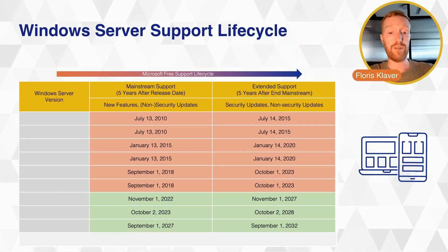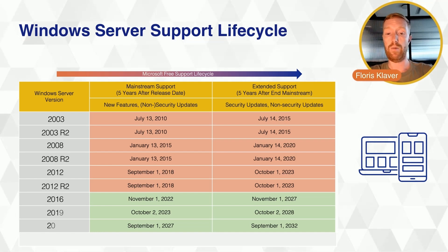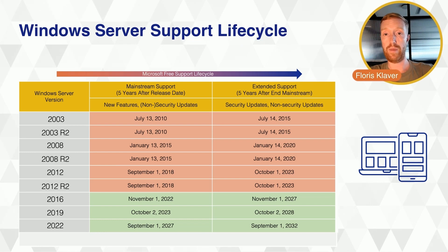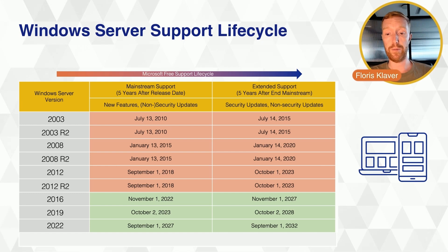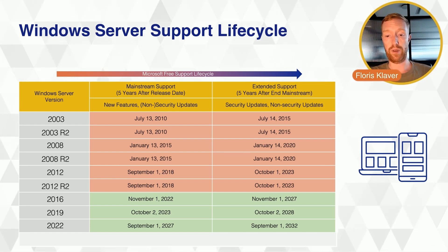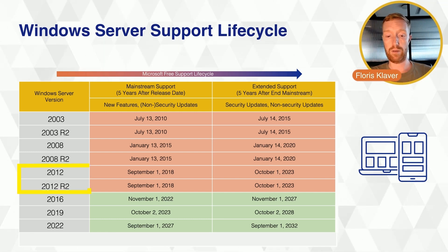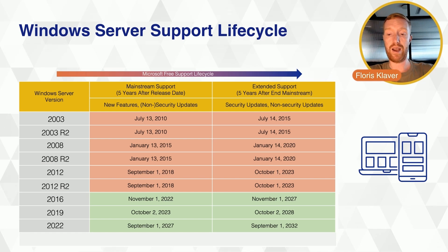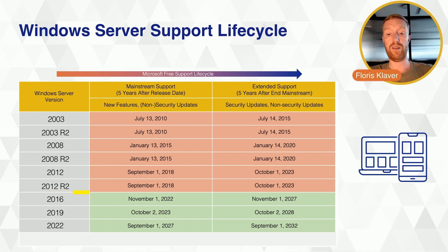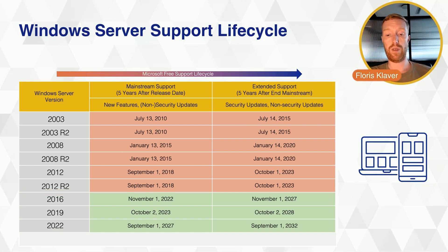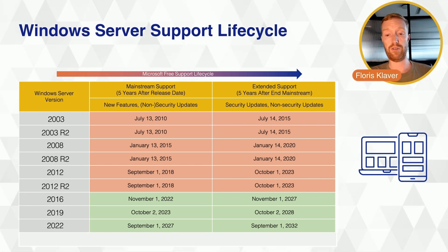When we look at the server support lifecycle, you see all the editions from 2003 up until the latest version 2022 and their status of mainstream or extended support. Typically Microsoft has a five-year mainstream support lifecycle with an additional five years of extended support. At the moment, 2012 and 2012 R2 are the final ones that ran out of extended support, and we're currently in the 2016-2022 support lifecycle stage. If you're running anything older than 2016, you've already run out of any support from Microsoft.